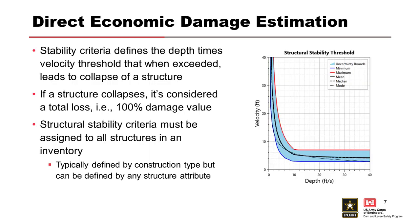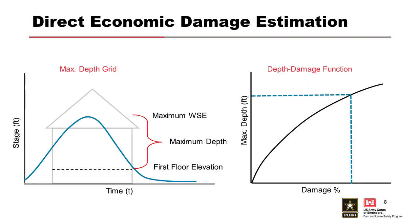Starting with direct economic damage estimation in LifeSim, the first question regards structural stability. If depths and velocities are such that the structure loses stability and collapses, we assume 100% damage. Anything above the red line on the stability chart collapses; anything in the blue shaded area could collapse — that's what we're trying to model. Stability is informed by the construction type of each individual structure.